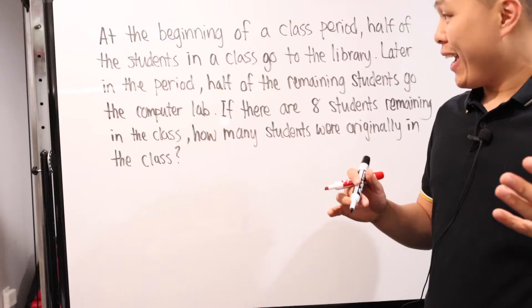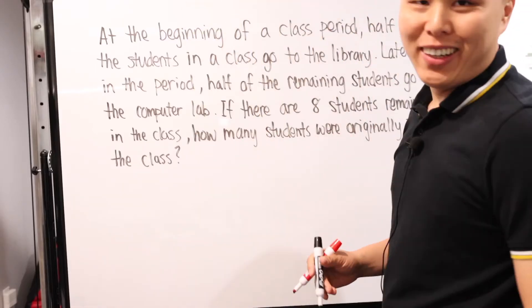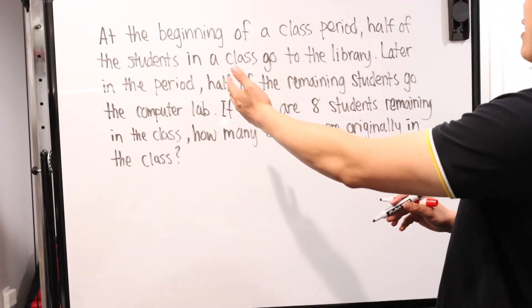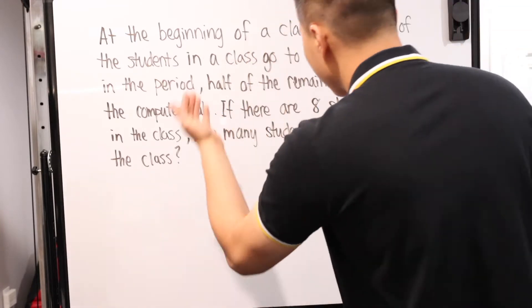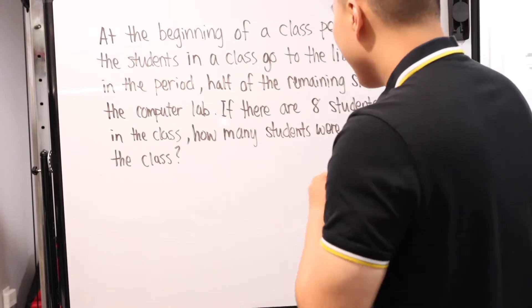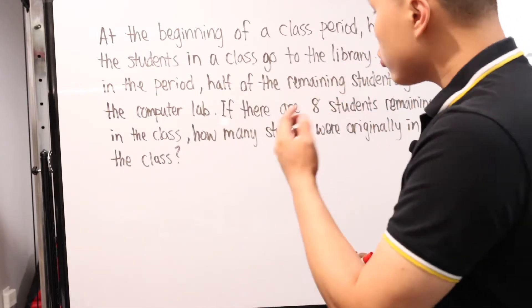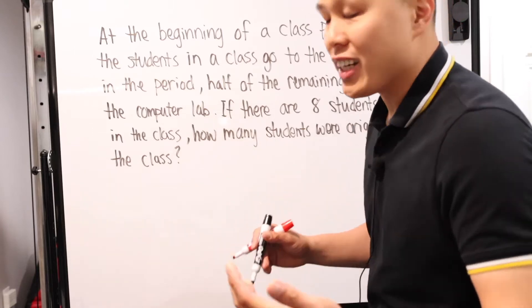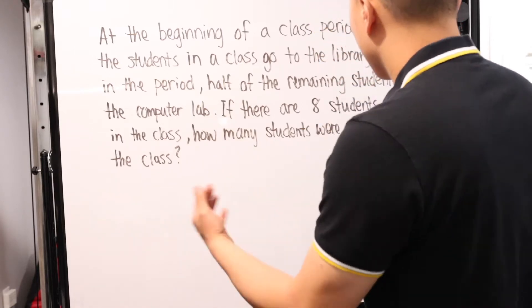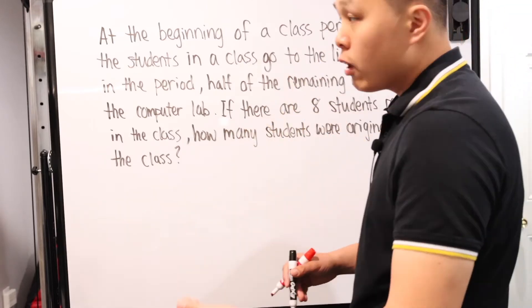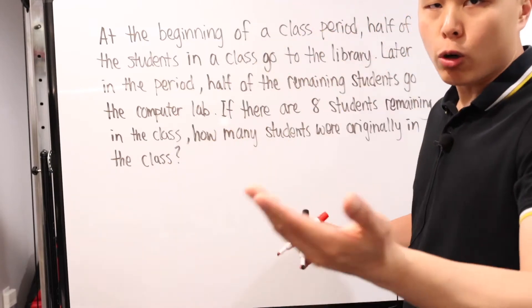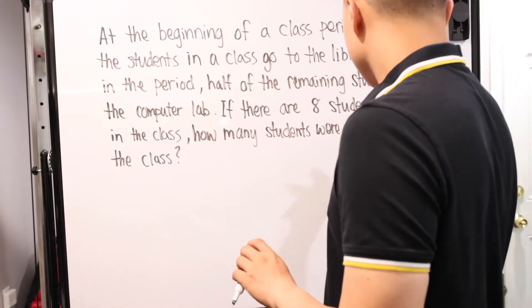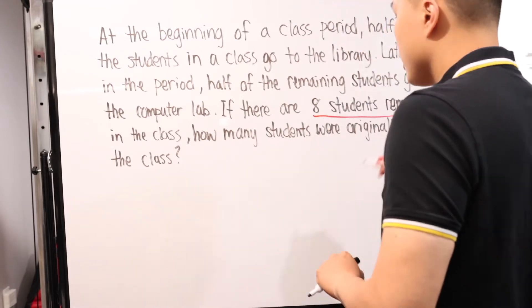Let's move on to problem 22. At the beginning of a class, half the students in the class go to the library. Later in the period, half the remaining students go to the computer lab. If there are eight students remaining in the class, how many students were originally in the class? This is one of those where you can end up making your life a lot easier just by going backwards, working through this problem in a reverse order.